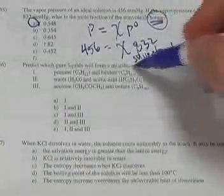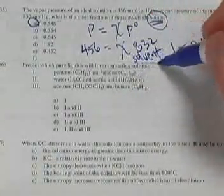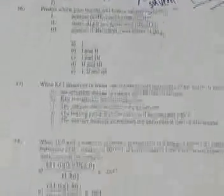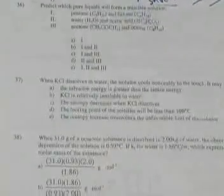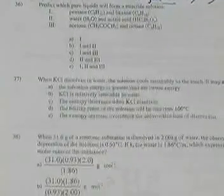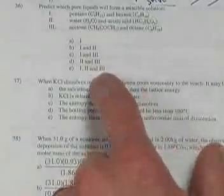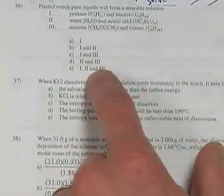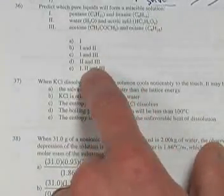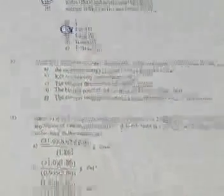Number 36: predict which pure liquids form a miscible solution. The answers are 1 and 2. Acetone and octane do not form a miscible solution, as we discussed earlier.